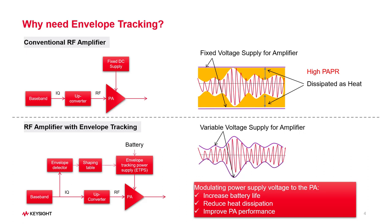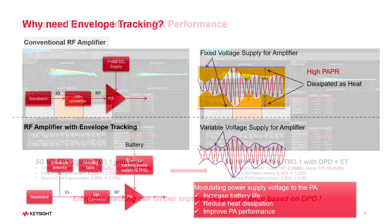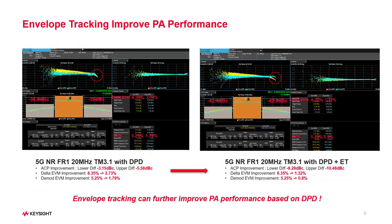Envelope tracking can reduce heat dissipation, increase battery life, and improve power amplifier performance. We've already seen how DPD technology improves PA performance. If you are not familiar with this, please go to other videos in this YouTube channel — the links are in the description box. In today's video, you'll see that envelope tracking can further improve power amplifier performance. For the 5G NR FR1 20 MHz test model 3.1 signal, ACP and EVM results both show dramatic improvement with ET technology applied.